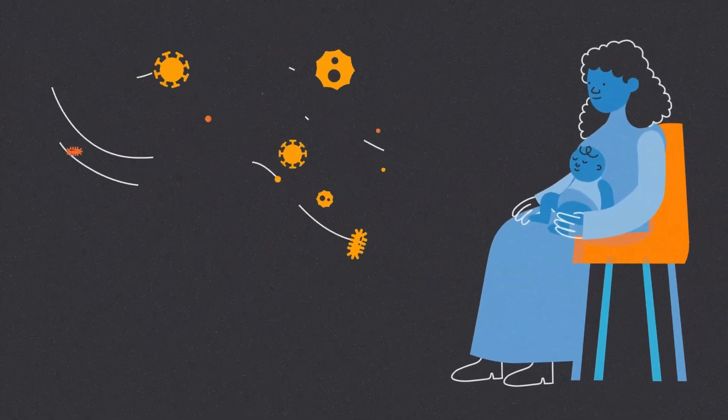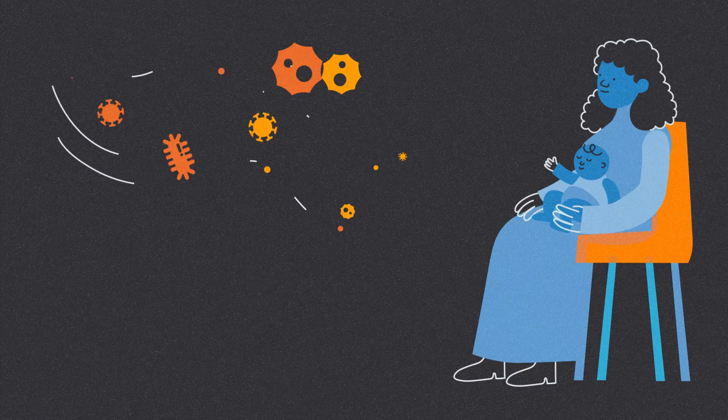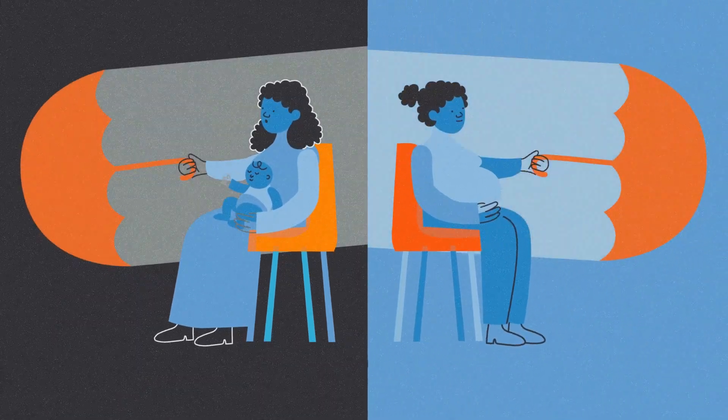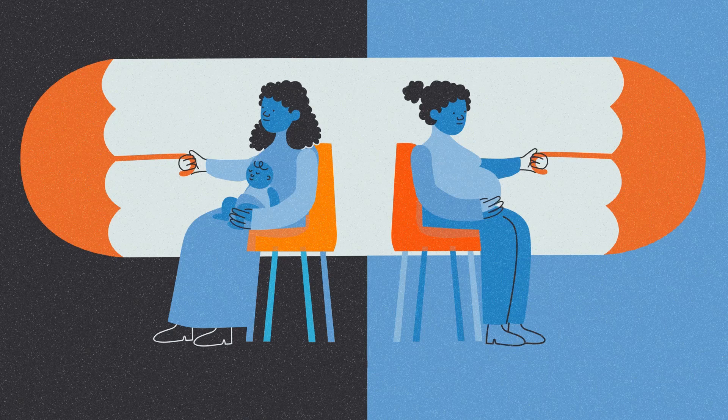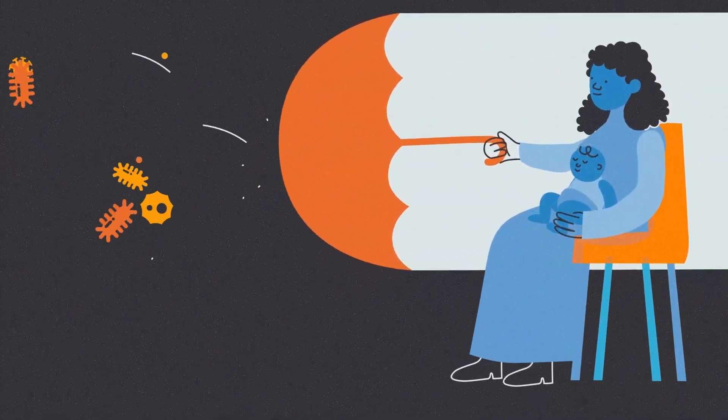Babies don't have their first set of immunizations until they are eight weeks old. So it's important that their mothers are vaccinated against certain illnesses during pregnancy, since this will protect them until they can be vaccinated themselves.